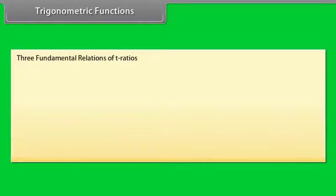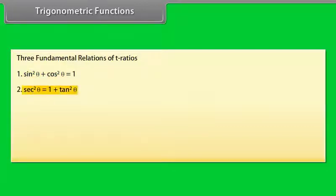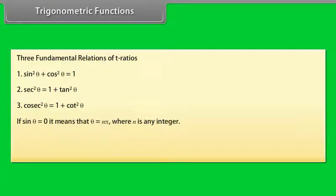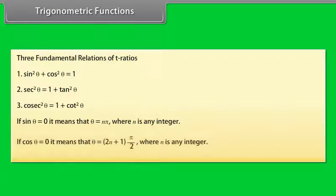Three fundamental relations of trigonometric ratios: sin²θ + cos²θ = 1; sec²θ = 1 + tan²θ; cosec²θ = 1 + cot²θ. If sin θ = 0, then θ = nπ where n is any integer. If cos θ = 0, then θ = (2n+1)π/2 where n is any integer.